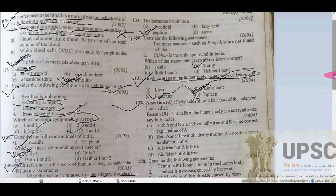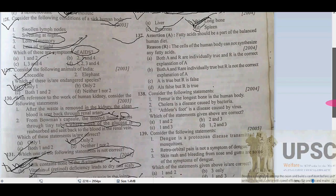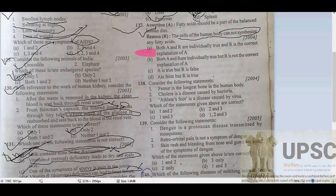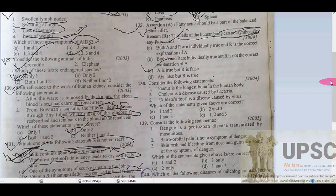Assertion: fatty acids are part of the balanced human diet — that is true. Reason: cells of the human body cannot synthesize any fatty acid — that is false. The reason is false because human body cells can synthesize various fatty acids except linoleic and linolenic acid.